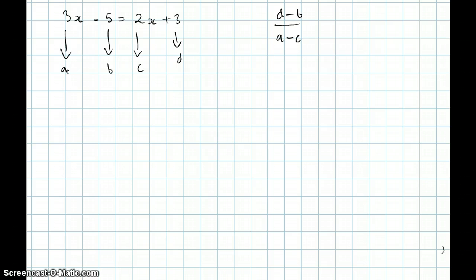So 3 minus minus 5, because b is minus 5 not just 5, and a minus c so that would be 3 minus 2. And that would give us 8 over 1, which is basically 8.